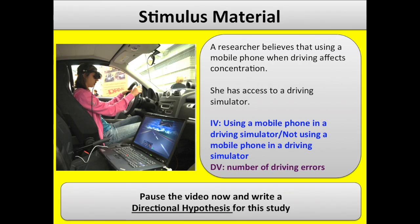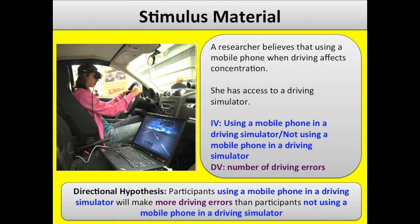Before I explain the three experimental designs, I'm going to show you the stimulus material. A researcher believes that using a mobile phone when driving affects concentration — she has access to a driving simulator. The IV is using a mobile phone in a driving simulator or not using one, and the DV is the number of driving errors. The directional hypothesis is: participants using a mobile phone in a driving simulator will make more driving errors than participants not using one.